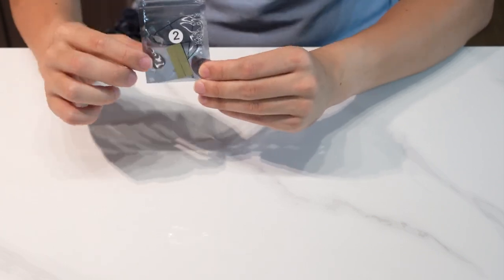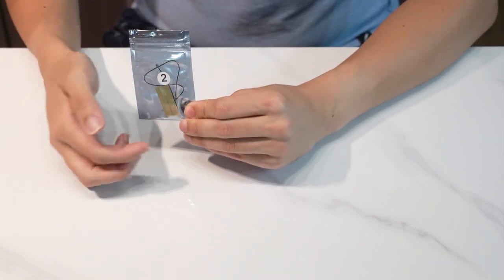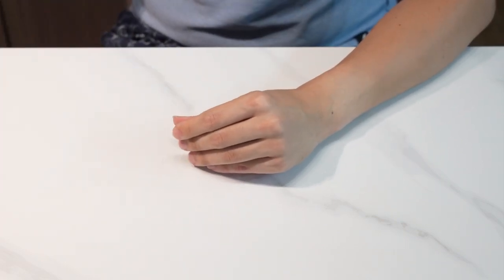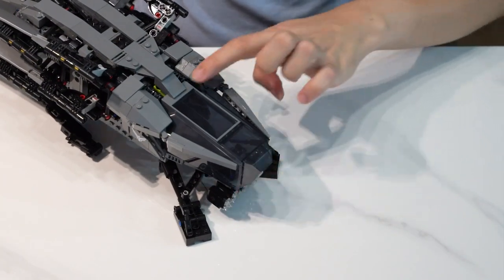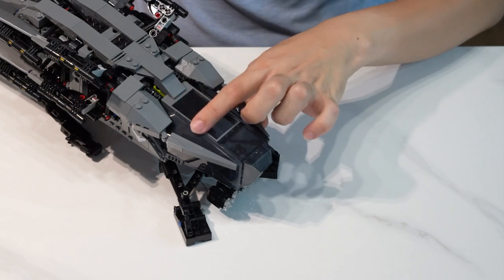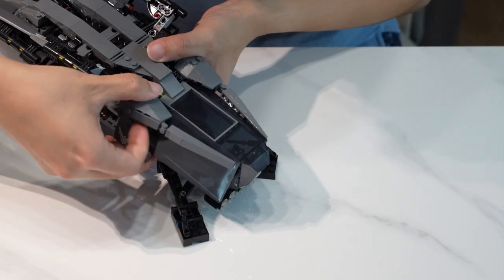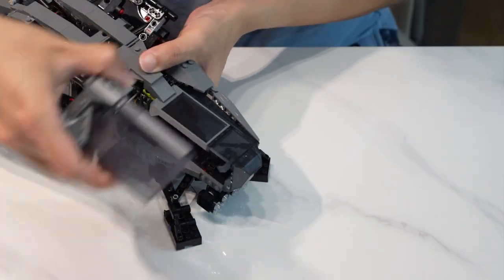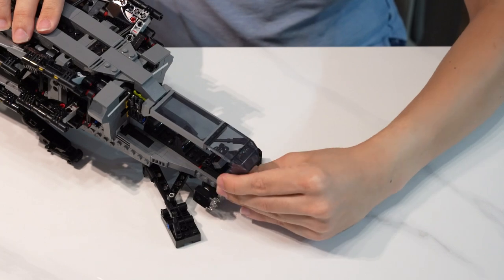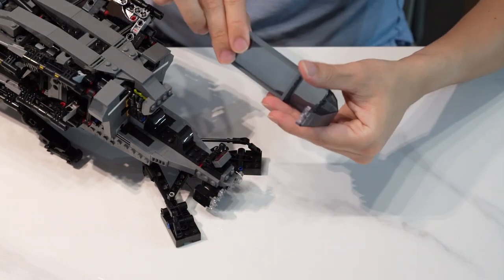We will now proceed with package 2 which has the cockpit lights. To install that, we need to get to the top window piece. We can do that by first removing the sides gently. After removing the sides, we can just pull the top window out.